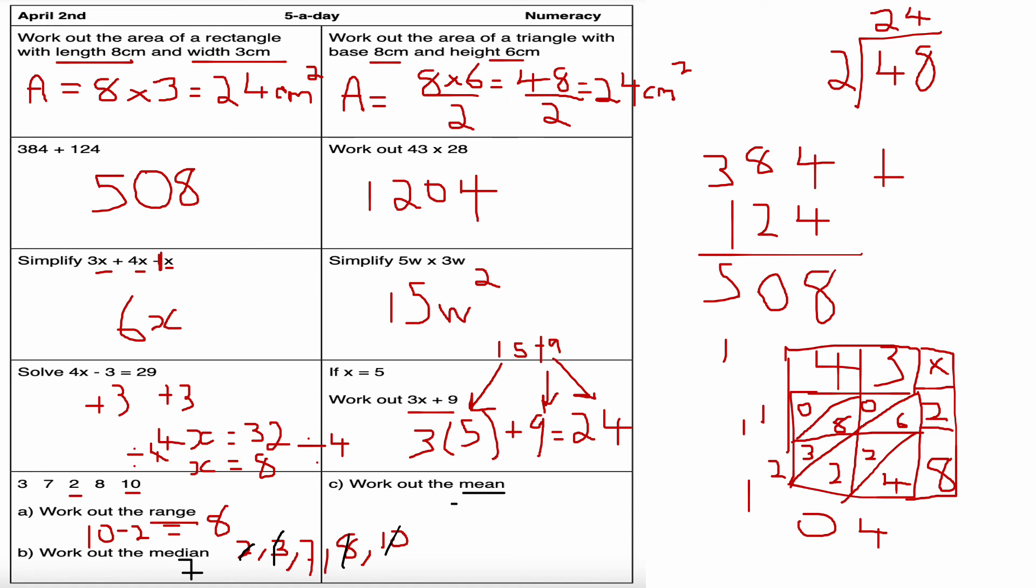Last question part c: work out the mean. The mean is the hardest one or the trickiest. 3 plus 7 plus 2 plus 8 plus 10—you add up all the digits and divide by the number of pieces of data you have. Think of it as the meaniest process to do because you're adding up a list of numbers then dividing by the total number of data. 3 plus 3 is 5, 5 plus 7 is 12, 12 plus 8 is 20, plus 10 is 30. 30 divided by 5, the answer I get is 6. So the answer to part c is 6—6 is my mean, 6 is my average.